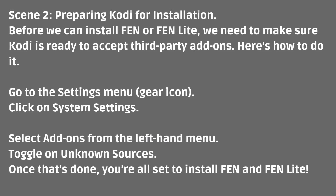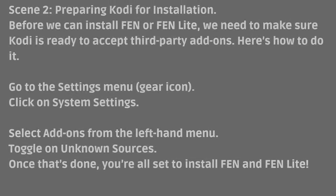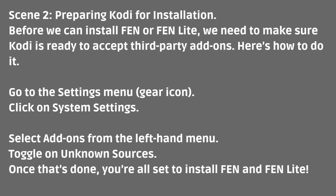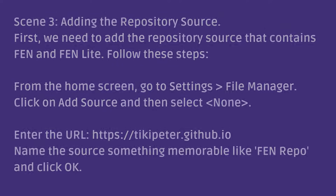Before we can install Fenn or Fenn Lite, we need to make sure Kodi is ready to accept third-party add-ons. Here's how to do it: go to the Settings menu gear icon, click on System Settings, select Add-ons from the left-hand menu, and toggle on Unknown Sources. Once that's done, you're all set to install Fenn and Fenn Lite.